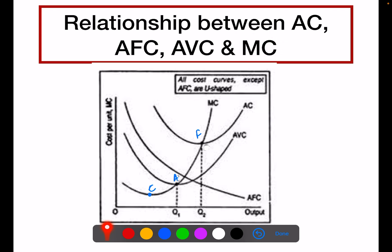We will start with the relationship between AC, AFC and AVC. The first point is that the AC curve and AVC curve are both U-shaped curves. Why? Because of the law of variable proportions.